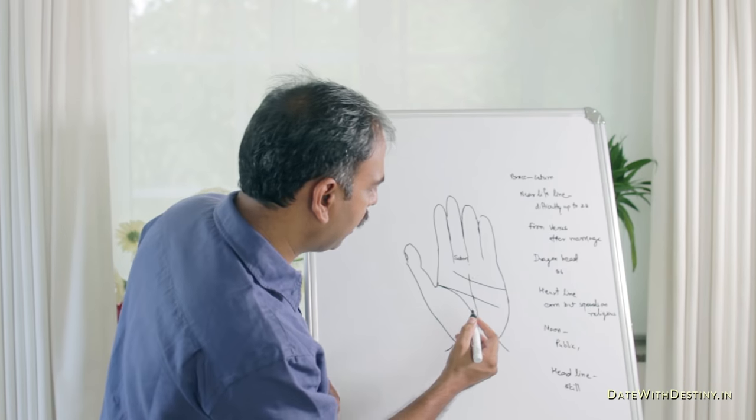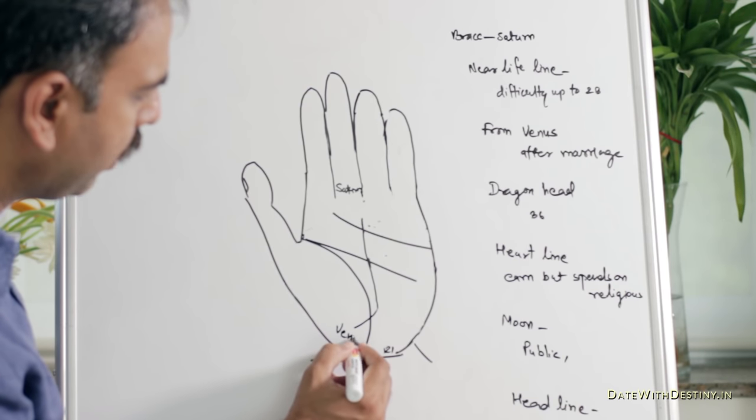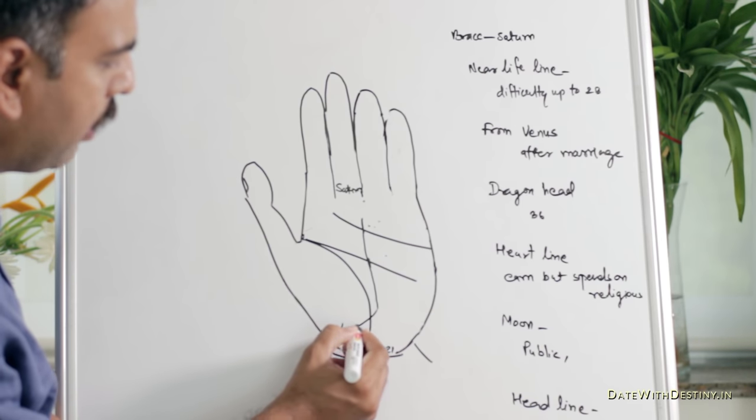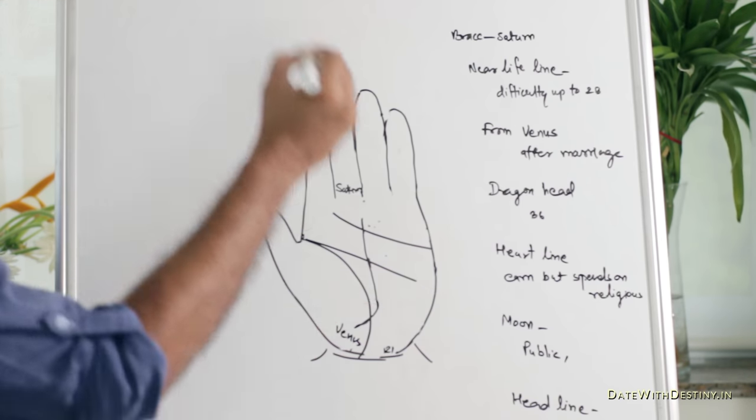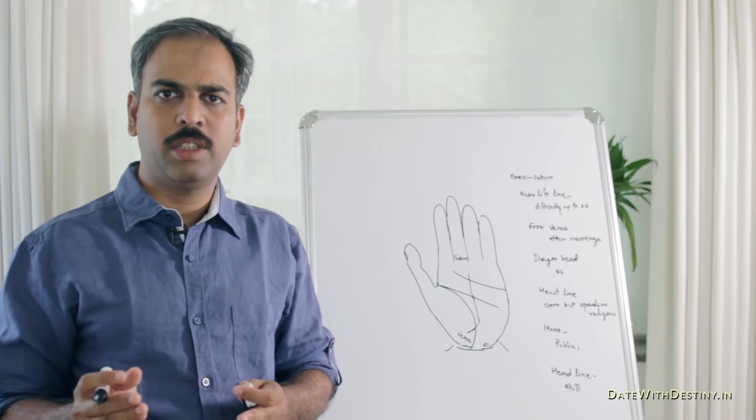Then, if it starts from Venus. See, this is the Mount of Venus. If the line starts from Venus and goes to its destination point, then after marriage, he will get success.